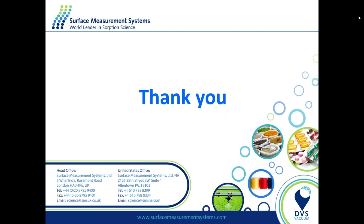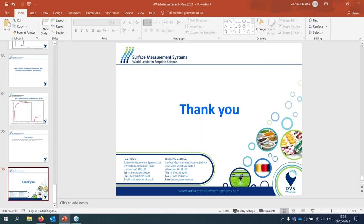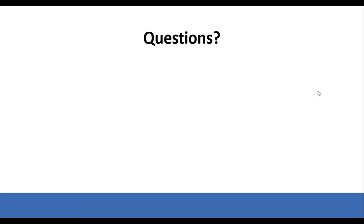Thank you, Vlad — that was very enlightening. We have our first question. Just to remind the audience, there are two ways to submit questions: in writing through the questions tab, or raise your hand and ask over the microphone directly to Dr. Martis. The question is: what is the best method to measure vapor pressure of volatile materials? The best method is the static method, because evaporation rates at ambient temperatures are very high. For the Knudsen effusion method, the sample will evaporate too quickly before you are able to obtain any good vapor pressure data. So the static method is the method of choice.